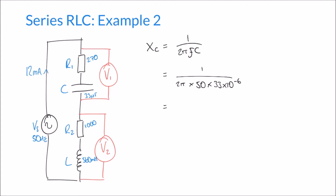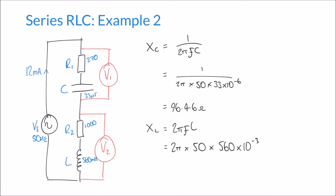That gives us Xc = 96.46 ohms. Now for Xl: the formula is 2πfL, so that's 2π × 50 × 560 millihenries (560 × 10⁻³), and that gives a reactance of 175.93 ohms.